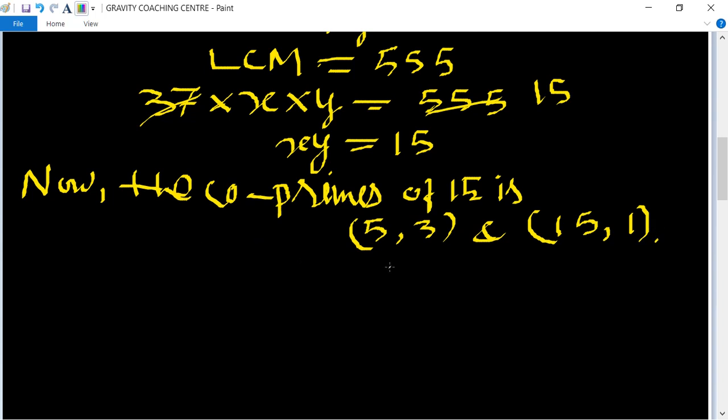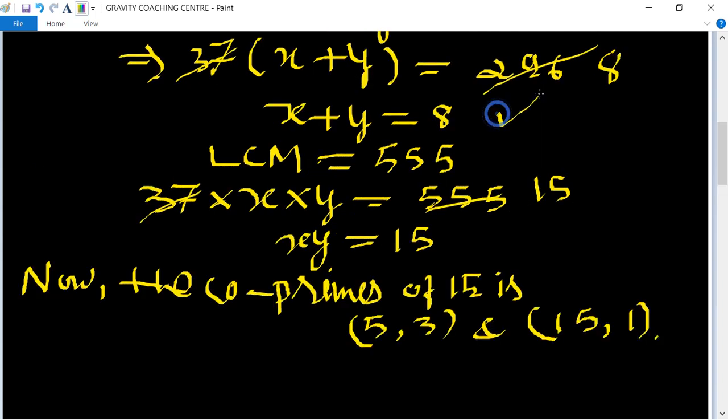So here, if we put (15, 1) in this equation, it can't satisfy the equation, so we can't take this pair. And (5, 3) satisfies the above equation, so we take (5, 3).